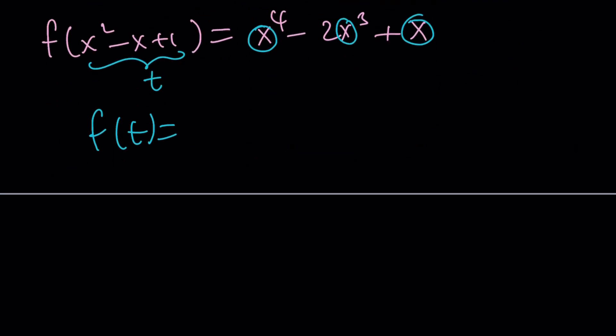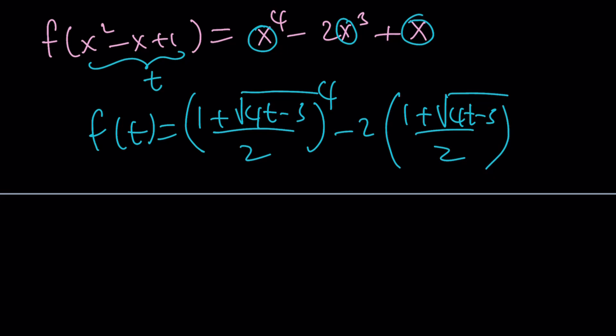So it's going to be (1 + √(4t - 3))/2. I need to raise it to the fourth power. That's my x by the way. Minus 2 times (1 + √(4t - 3))/2 again. Now this time I'm going to raise it to the third, and finally I'm just going to add that to the whole thing. Right? Great.